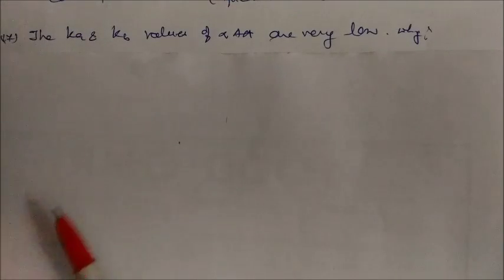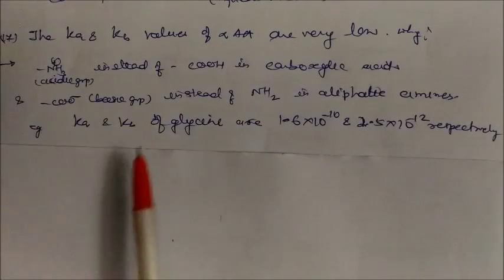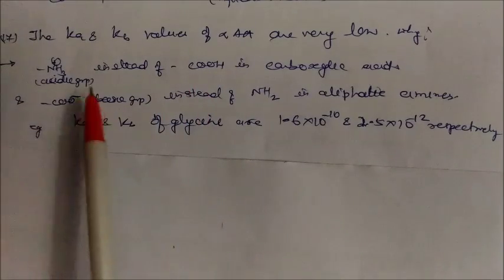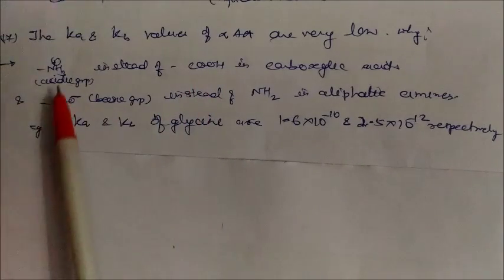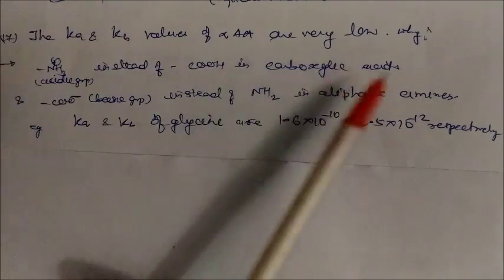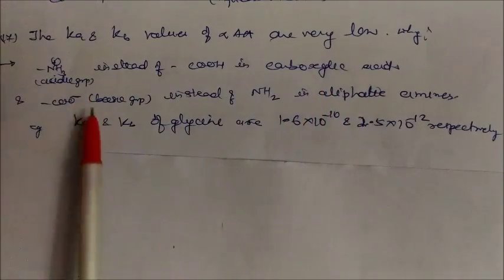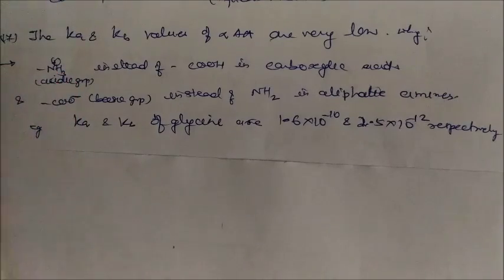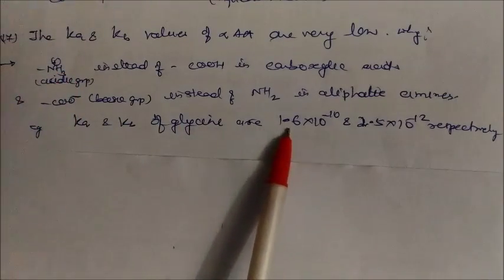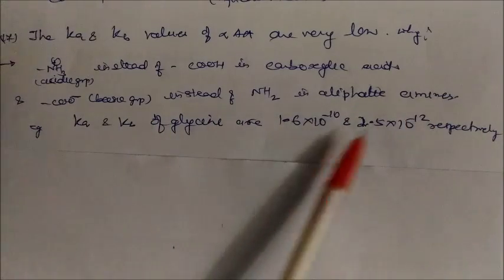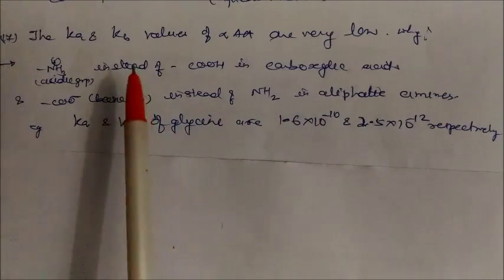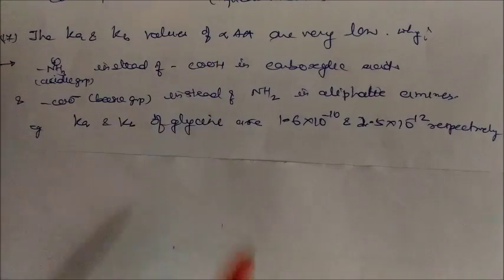Why are the Ka and Kb values of alpha amino acids very low? Alpha amino acids consist of an acidic group — where the carboxyl is weakened compared to a free carboxylic acid — and a basic group weaker than a free aliphatic amine. Because both the acid and base components are mutually weakened in the zwitterionic form, the Ka and Kb values of alpha amino acids are both very low.